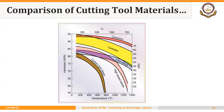Here we are comparing hardness as well as hot hardness. For high-speed steel, after a certain temperature, hardness gradually reduces. But carbides and ceramics are more stable at higher temperatures compared to HSS — they maintain their hardness better at elevated temperatures.